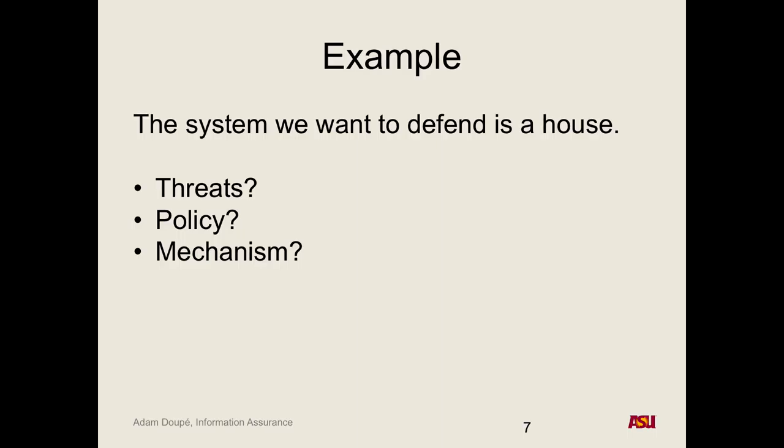Insurance could be part of your holistic threat strategy. For catastrophic damage - trees landing on your house - your policy would be: I want to recover the value of my home if destroyed, so you get insurance and pay a little bit of money in case those things happen. But insurance won't cover all types of threats.